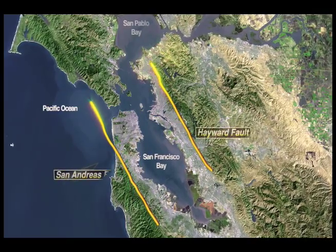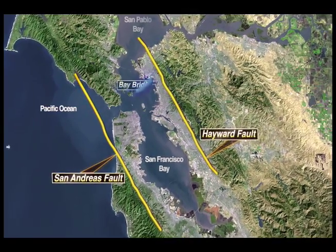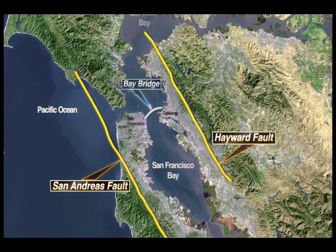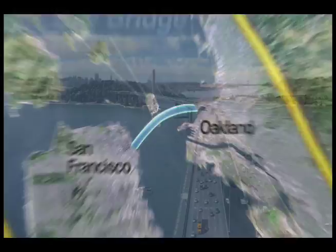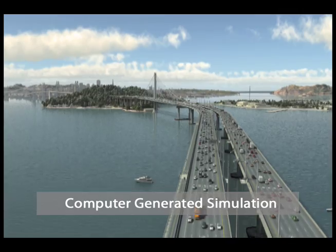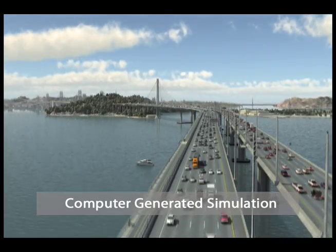As we come in, you can see that the two major fault lines are the Hayward Fault and the San Andreas Fault, located on either end of the Bay Bridge.